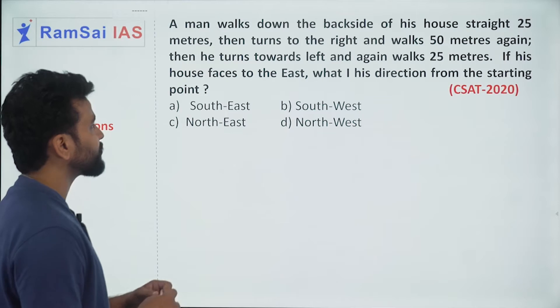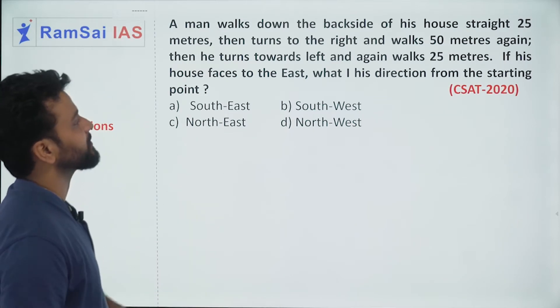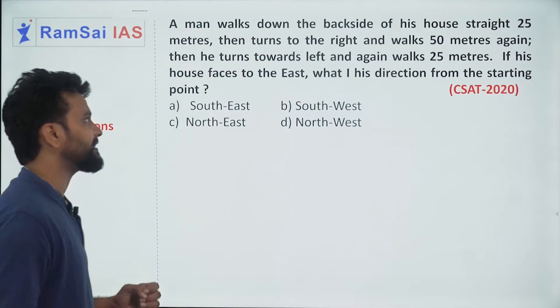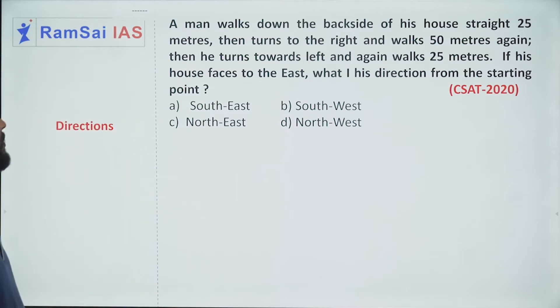then turns to the right and walks 50 meters again. Then he turns towards left and again walks 25 meters. If his house faces to the east, what is his direction from the starting point?